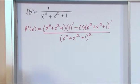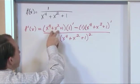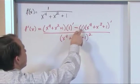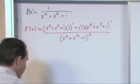So here we've done exactly what the quotient rule tells us. Bottom times the derivative of the top minus the top times the derivative of the bottom over the bottom squared.